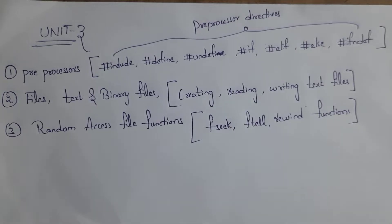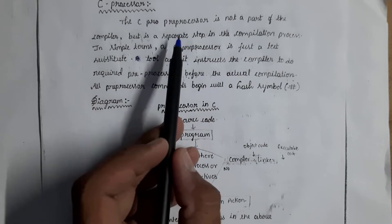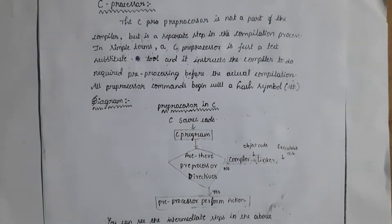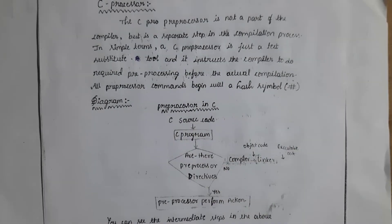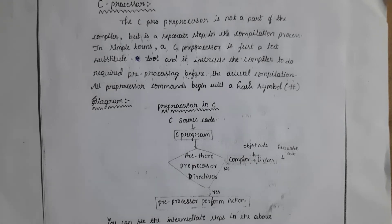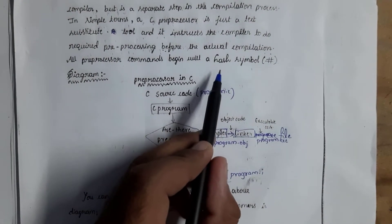Let's get started. The topic is pre-processor in C. Pre-processor is not a part of the compiler, but it is a separate step in the compilation process. In simple terms, we call the pre-processor a text substitution tool. Whatever tasks we perform before compilation, we call those pre-processing tasks. All pre-processor commands begin with the hash symbol — for example, #include stdio.h.